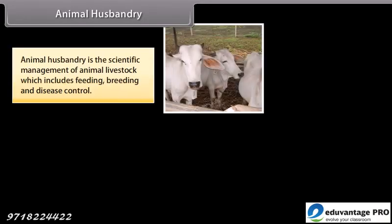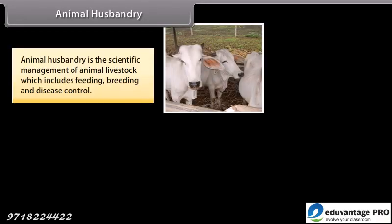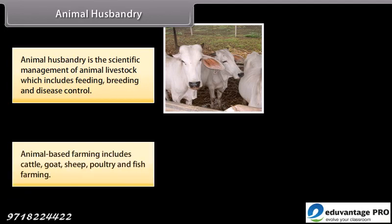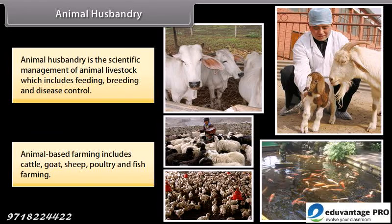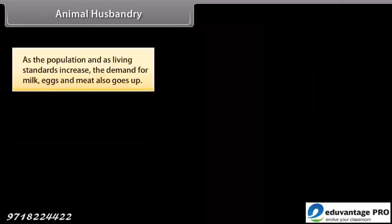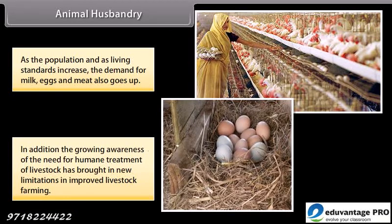Animal husbandry is the scientific management of animal livestock which includes feeding, breeding and disease control. Animal-based farming includes cattle, goat, sheep, poultry and fish farming. As the population and living standards increase, the demand for milk, eggs and meat also goes up. In addition, the growing awareness of the need for humane treatment of livestock has brought in new limitations in improved livestock farming.